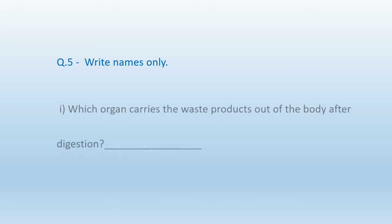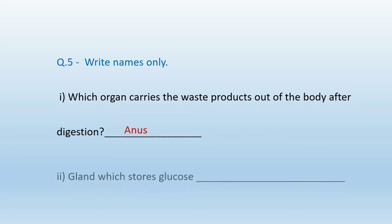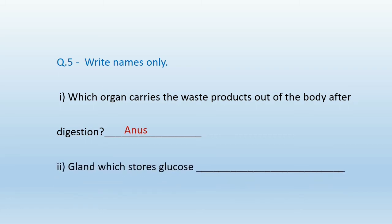Question number 5: Write only names. First, which organ carries the waste product out of the body after digestion? The answer is the anus. Second, which gland stores glucose? The answer is the pancreas.